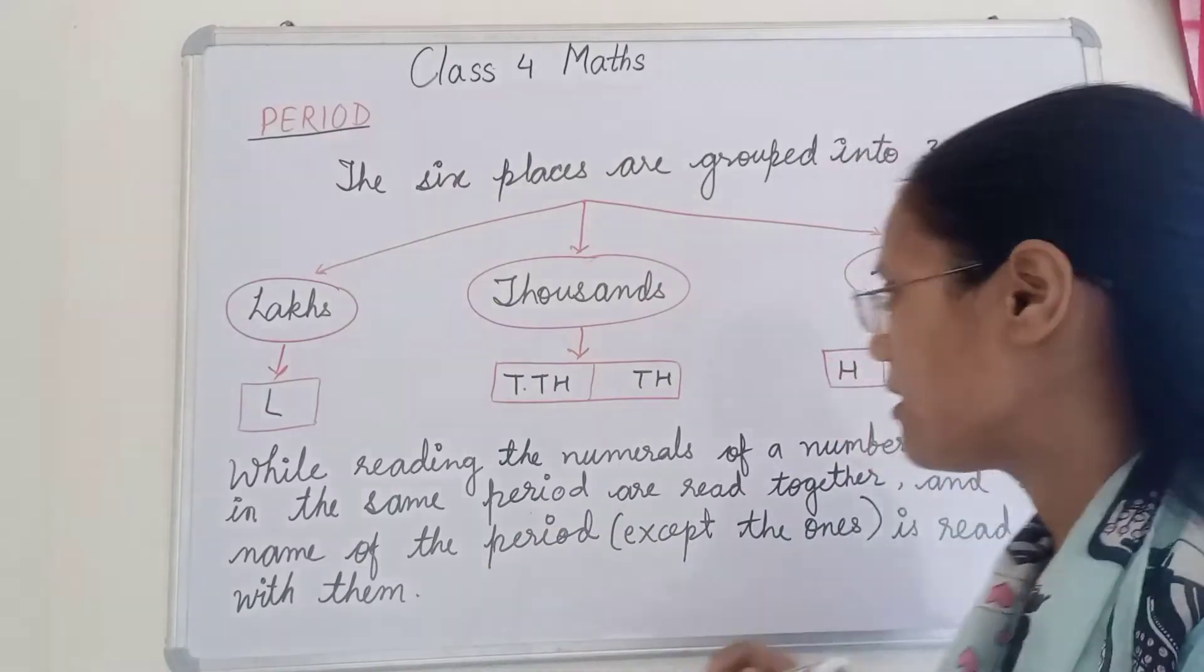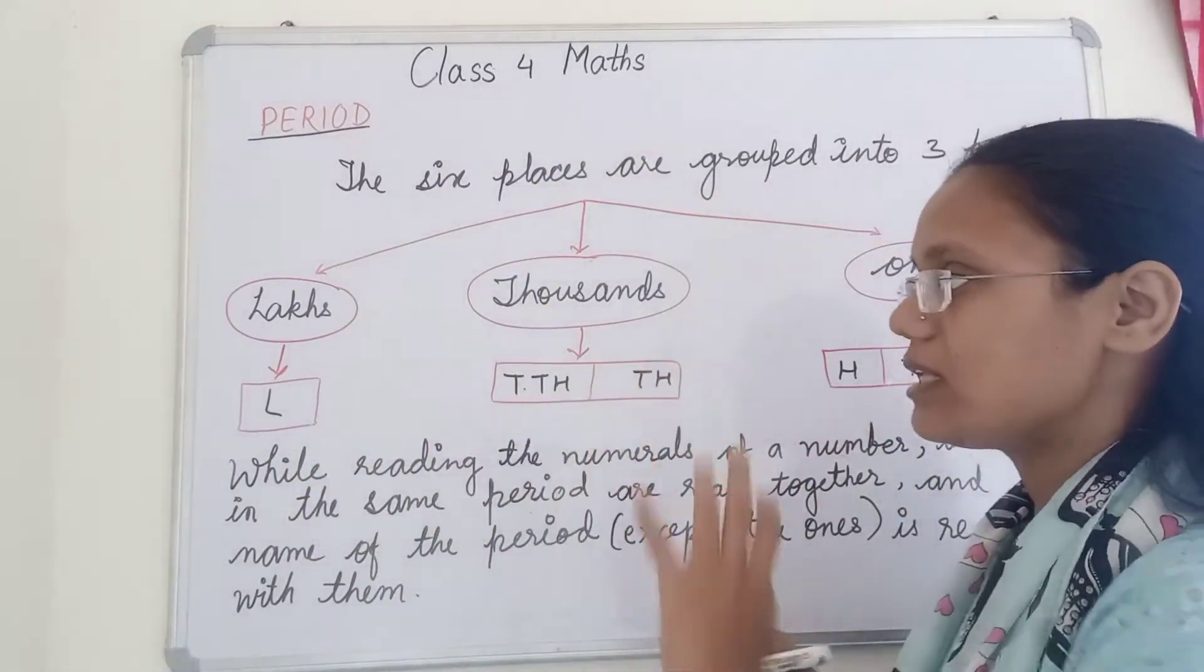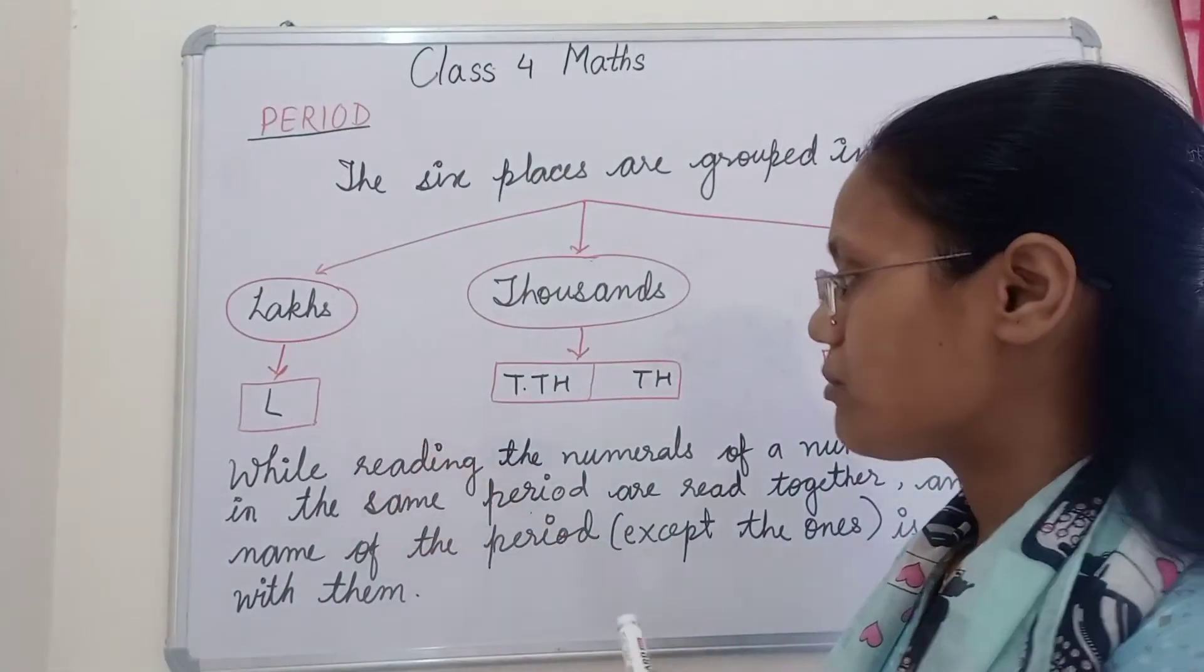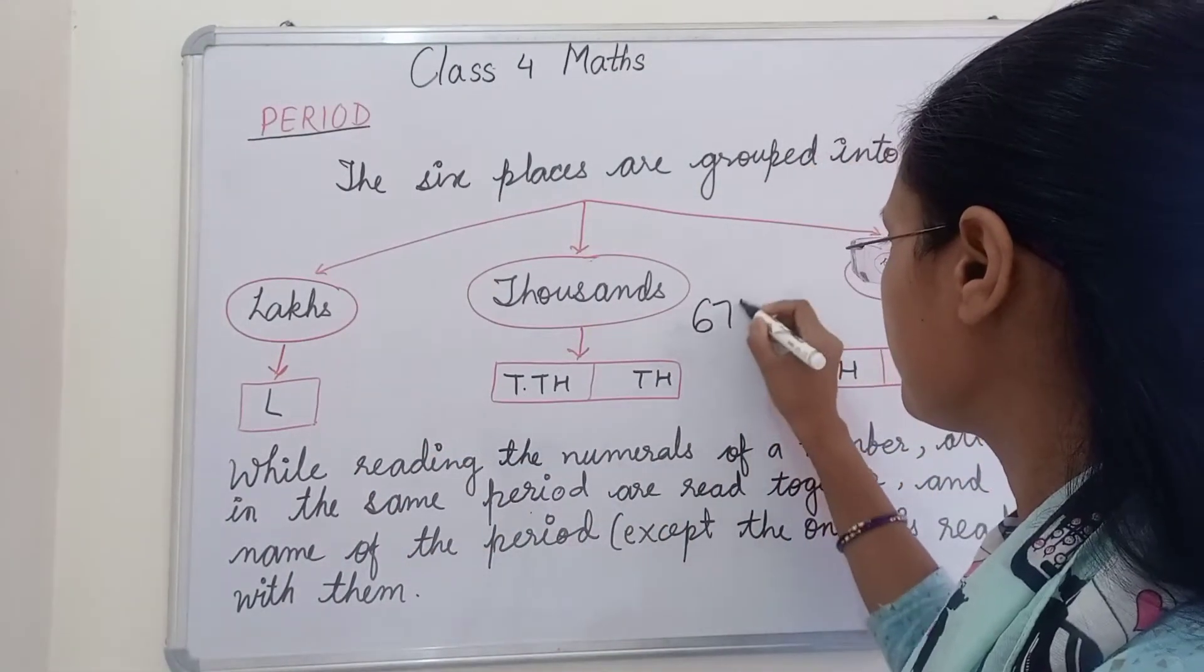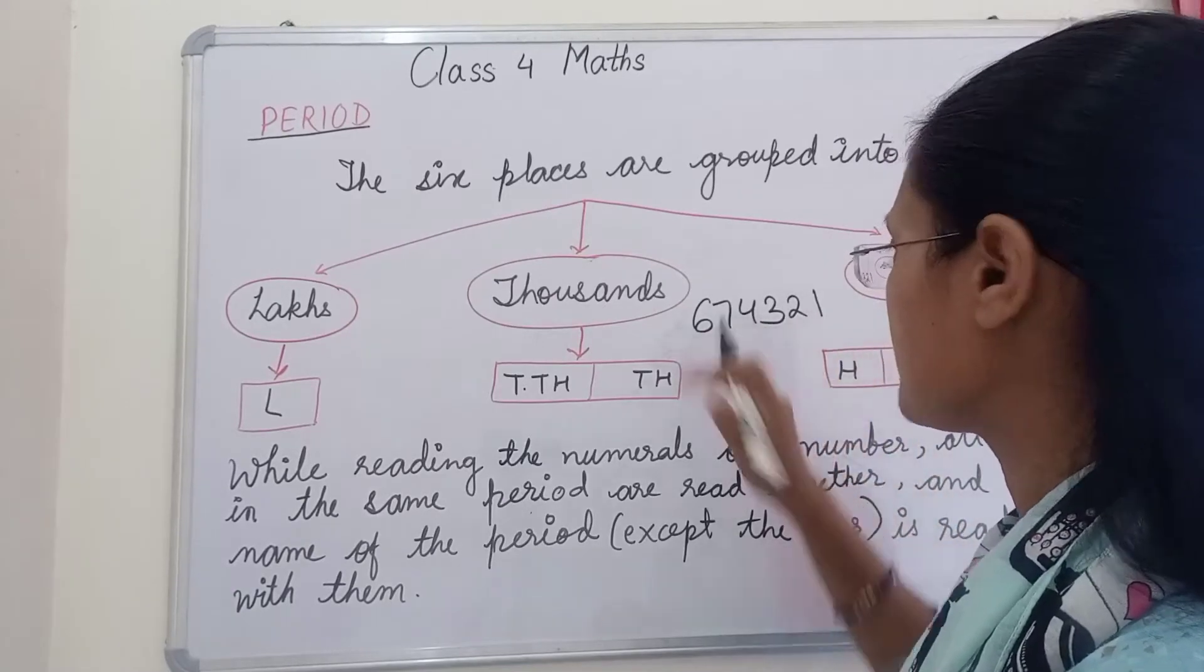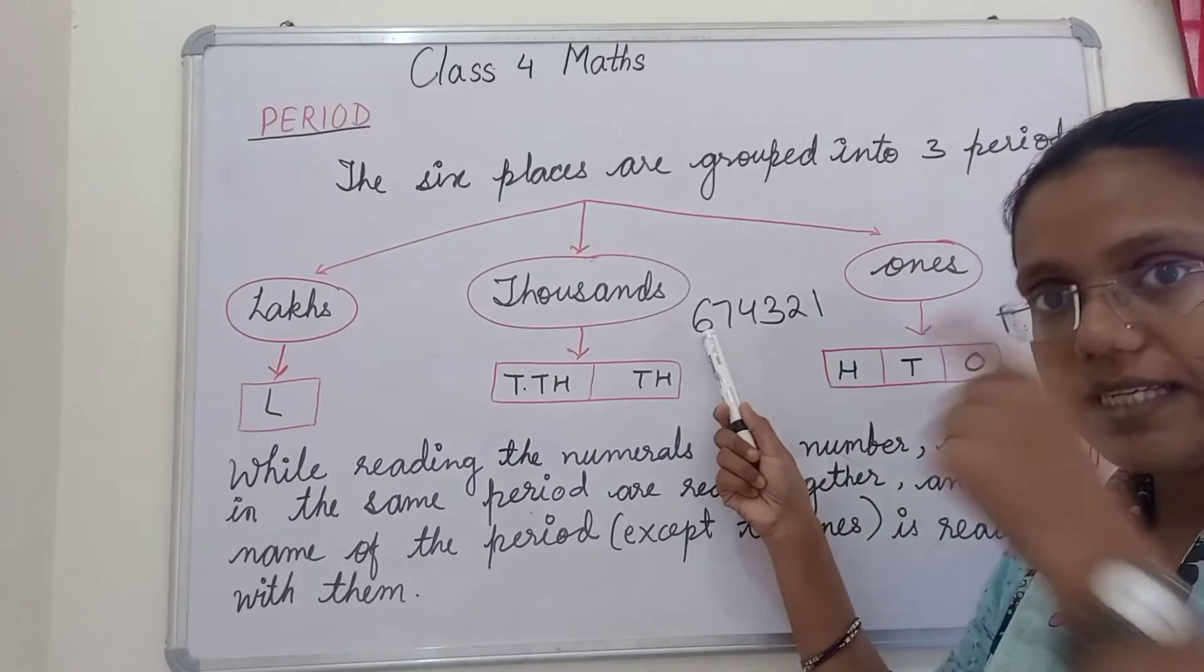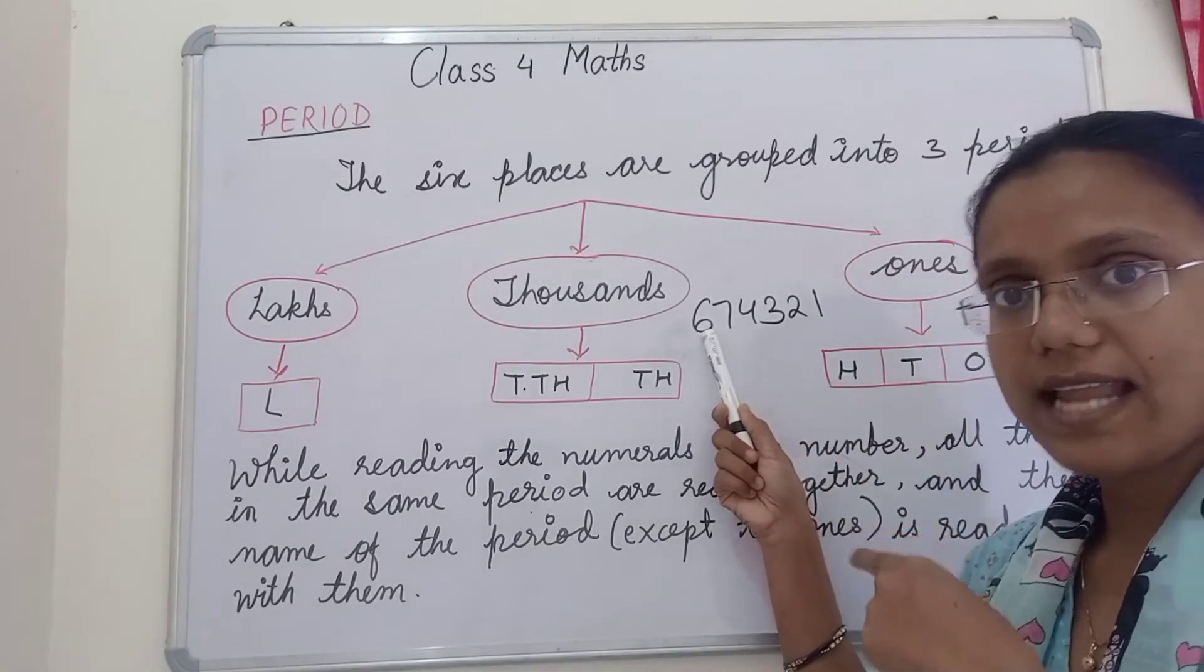That is a whole number of one period. All the numbers will be placed. Suppose the number is like this. This is six lakh. This is a lakh place. We will read it as lakh. Six lakh.